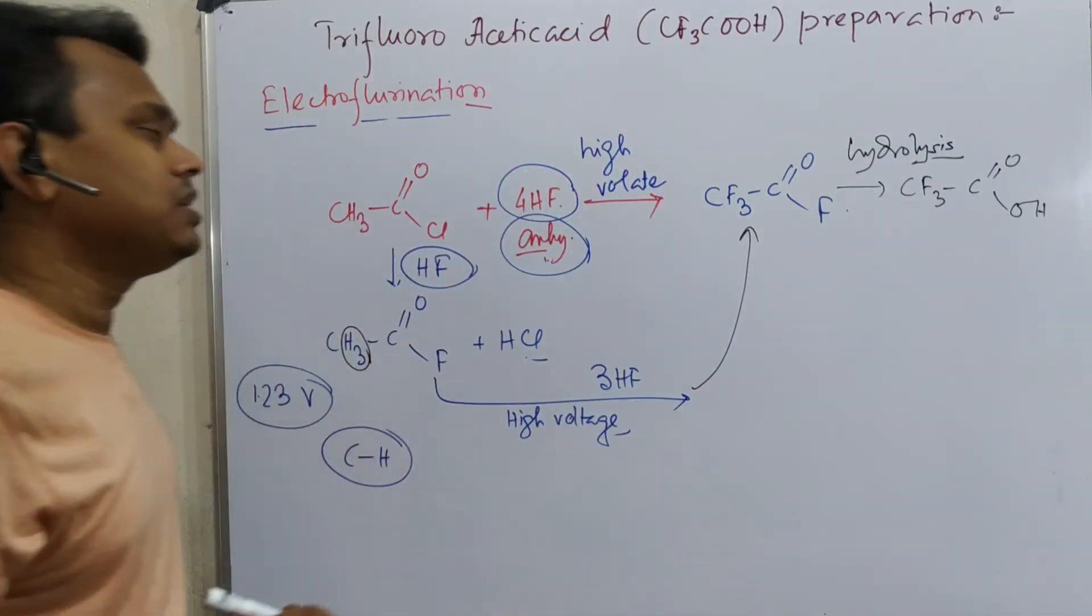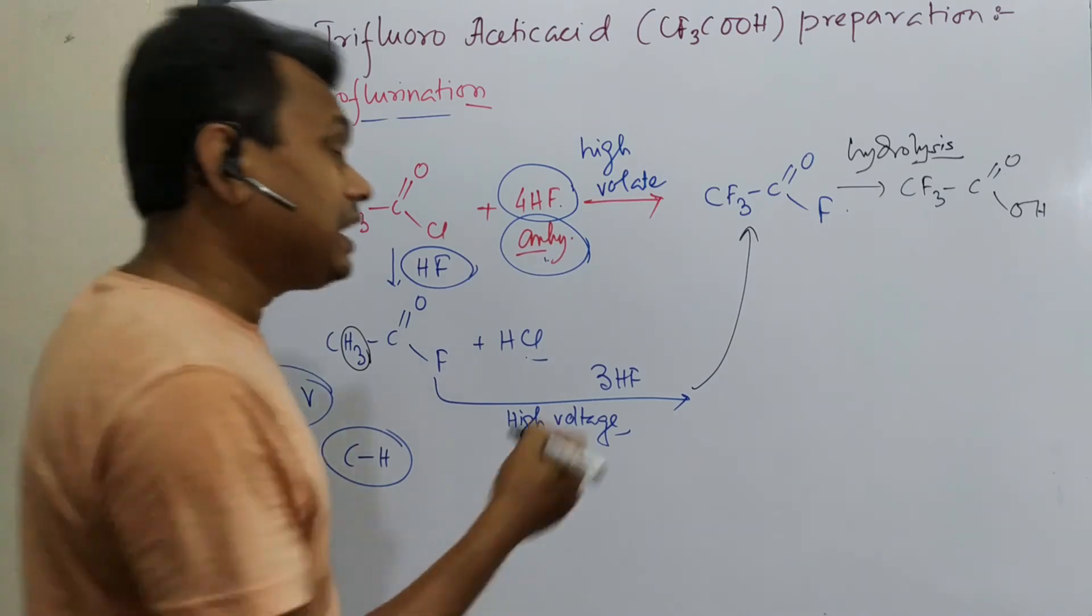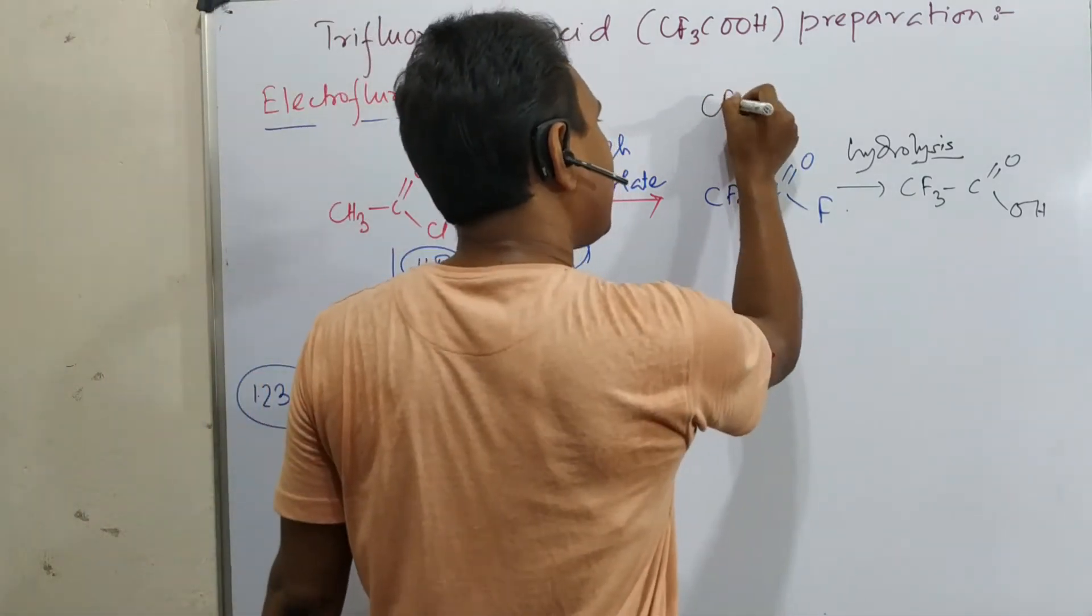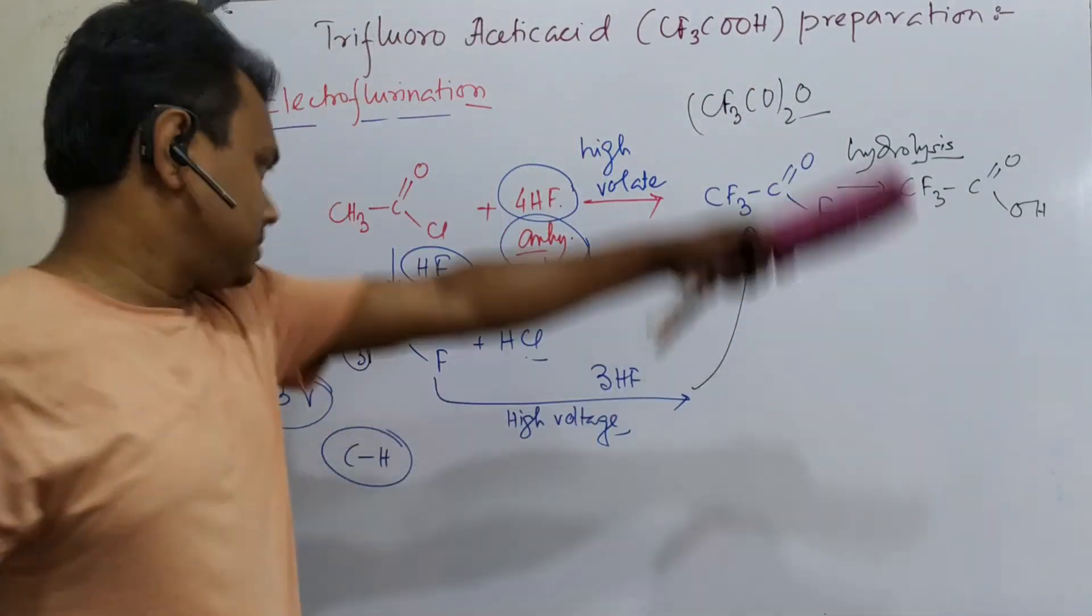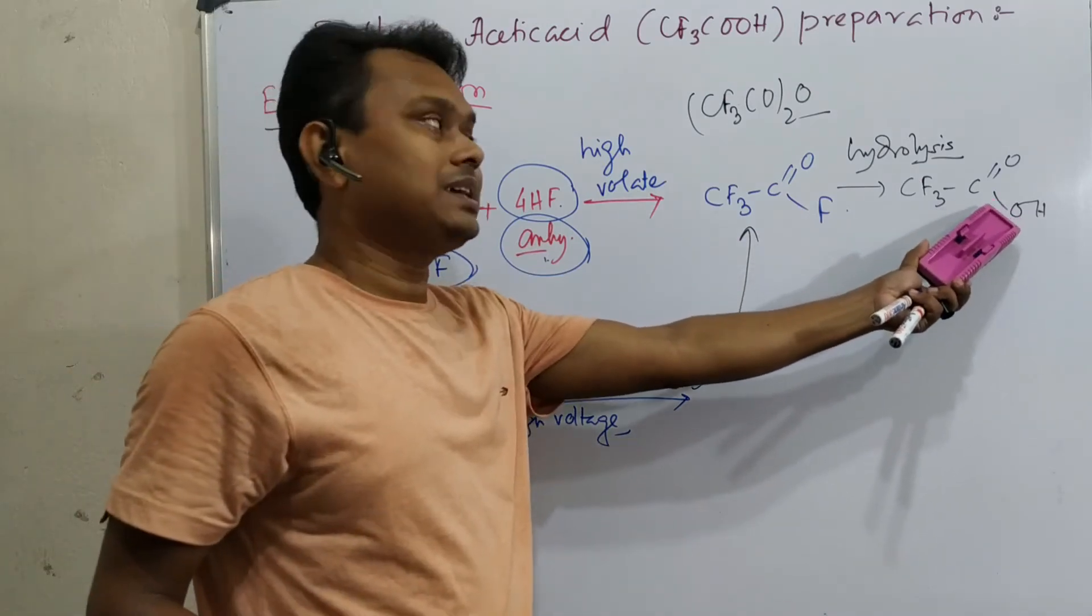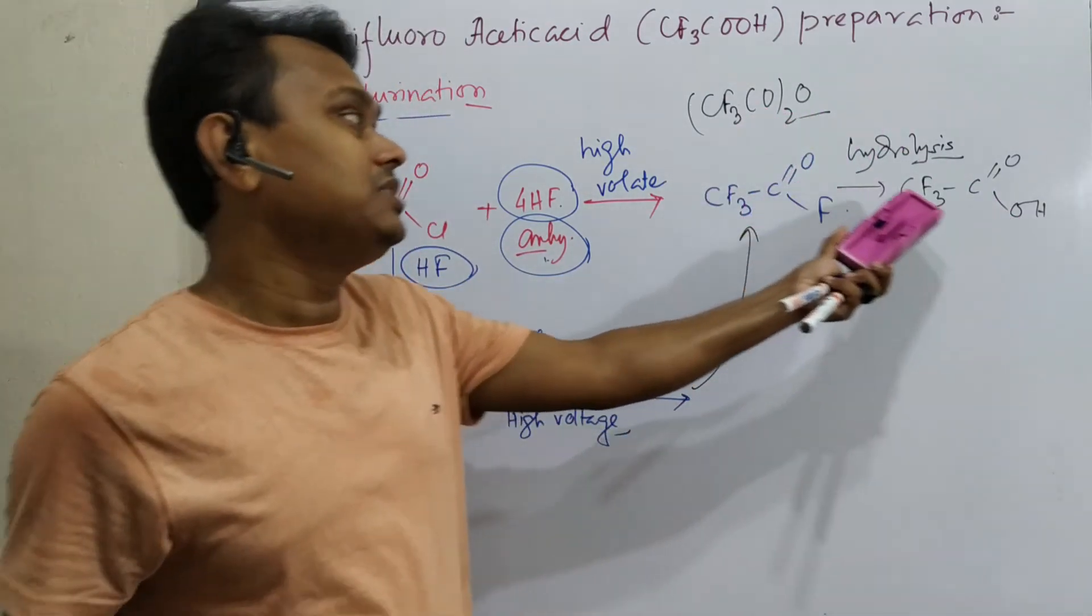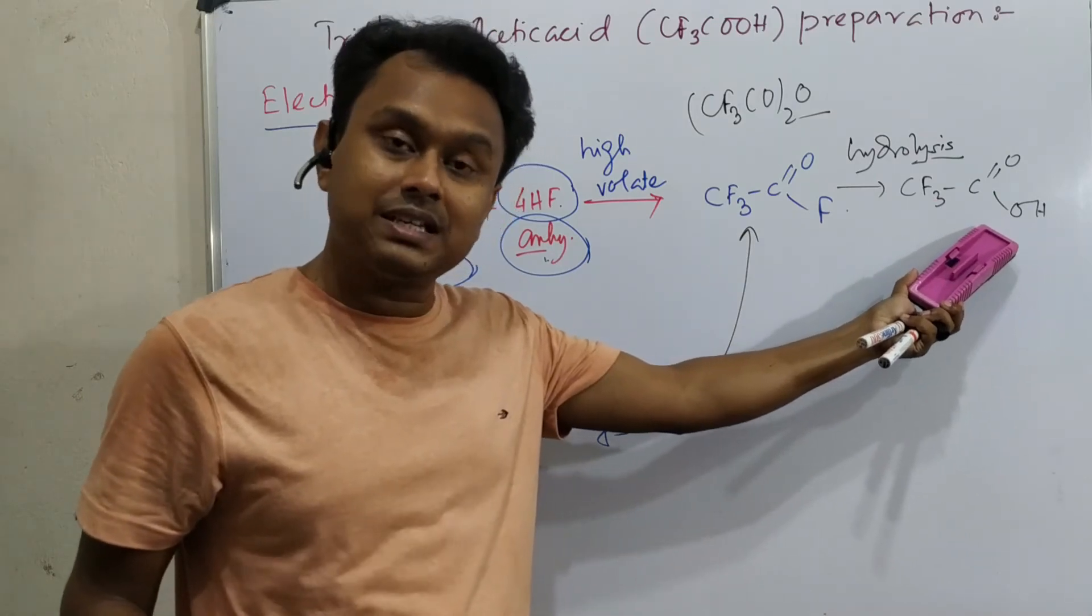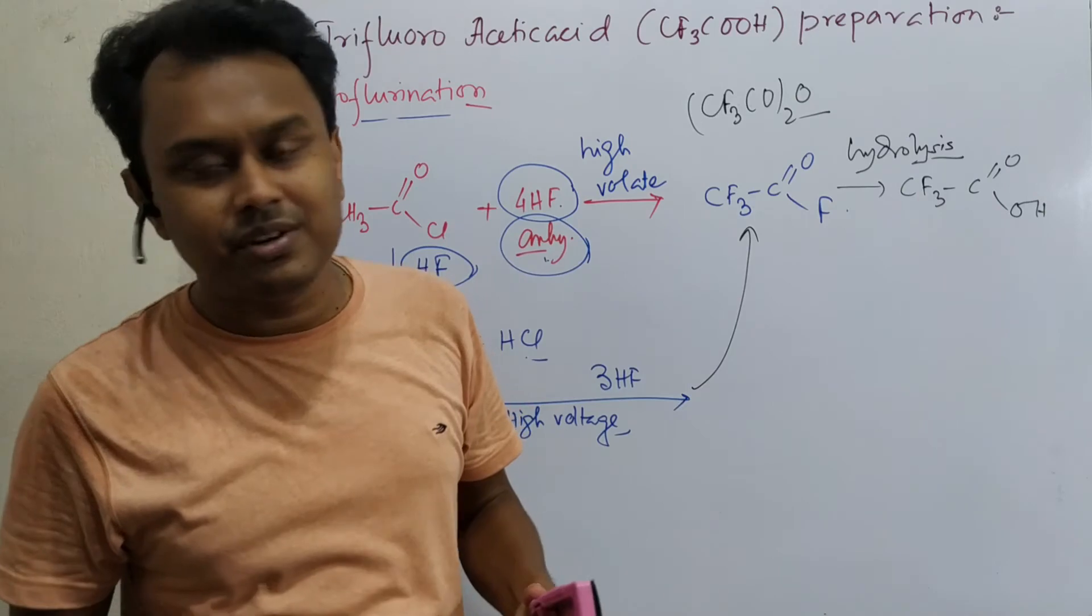By the way, just assume if you get water in the reaction medium somehow, then you can handle this by addition of CF3-CO-O-CO-CF3. This is trifluoroacetic anhydride. It will consume the water and self-convert into trifluoroacetic acid. And in reaction medium only pure trifluoroacetic acid will remain.